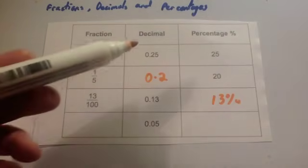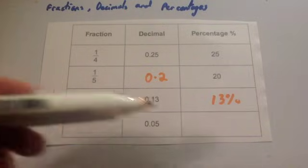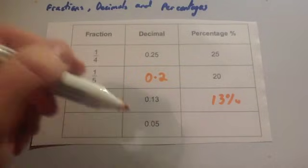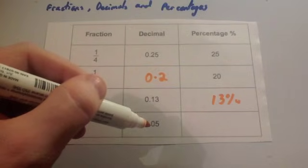Okay, and finally, you've been asked to write the decimal as either a fraction or a percentage. Again, I'd probably go straight to the percentage. To go from a decimal to a percentage, you times 100, so move the decimal place twice, 1, 2, that would be 5%.